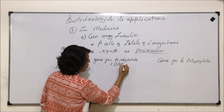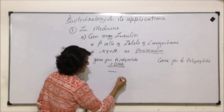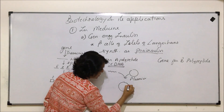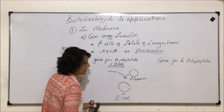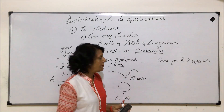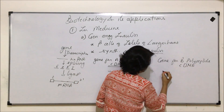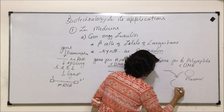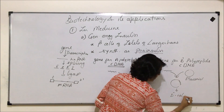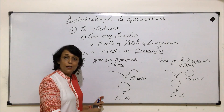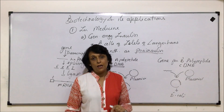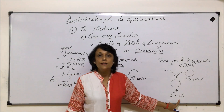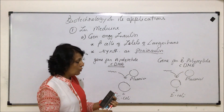The cDNA was introduced into E. coli. So when we say the gene for A polypeptide, it is actually the cDNA of the A gene. This cDNA was added into the plasmid, and this recombinant DNA was introduced into E. coli. The same thing was performed for the gene for B polypeptide — cDNA was incorporated into the plasmid of E. coli and introduced. So the A gene was introduced into one set of E. coli and the B gene into a different set.